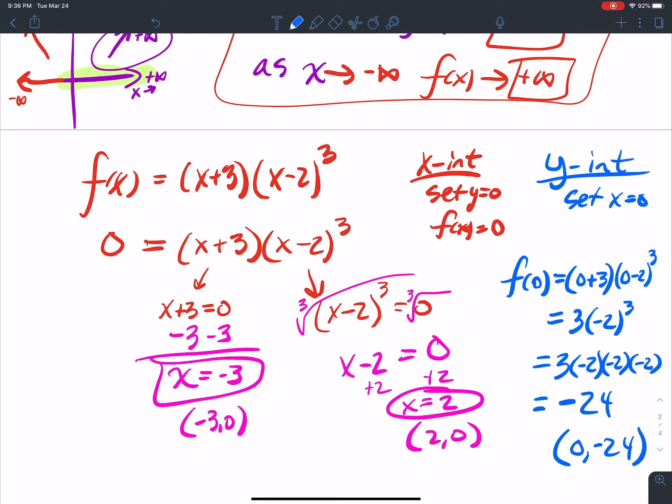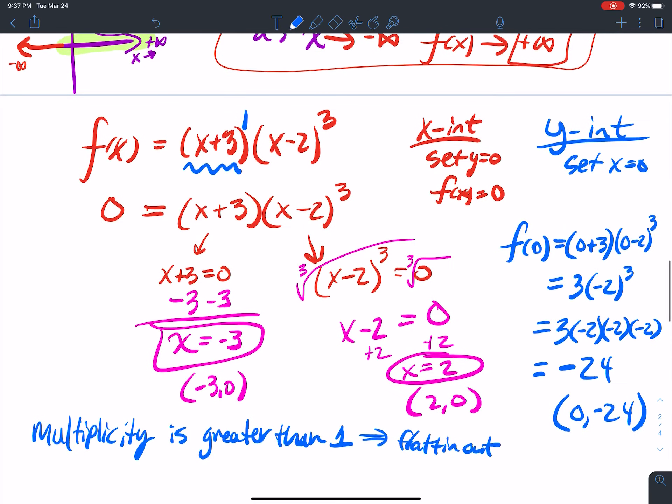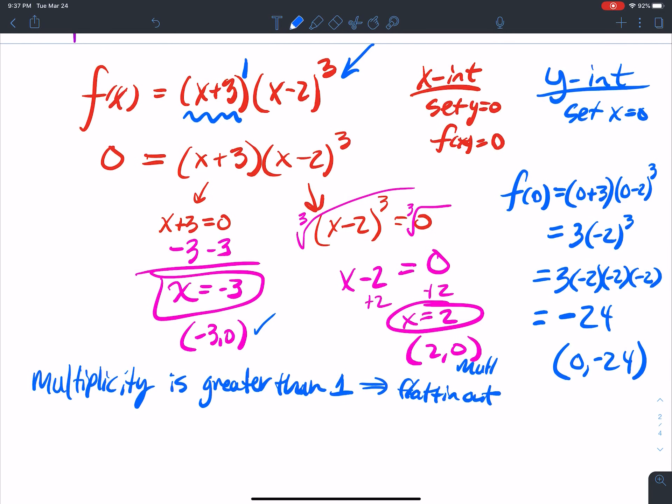Are there any zeros that flatten out? So flatten out when the multiplicity is greater than 1. We flatten out. We flatten out. The multiplicity for the first factor here is 1. So this one does not flatten out. Okay? But the multiplicity for this second one here is 3.